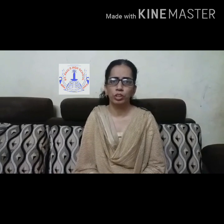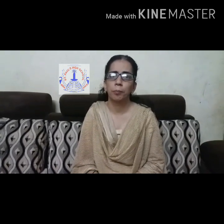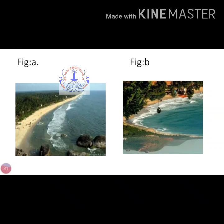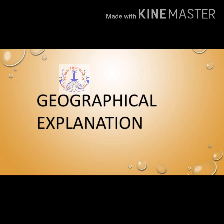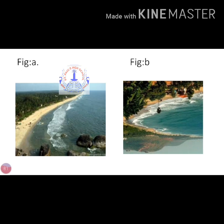But before we go into the detail of the lesson of Tides, observe the following pictures. Do the above photographs show the same place or different places? Observe and note the spread of water seen in both the photographs. What is this natural event called? Both the photographs show the same place. If you stay near the coast for some time, you will realize that as in figure A, the water is far away from the coast, whereas in the second figure, the seawater is sometimes very close to the coast. All these movements of the seawater are called Tides.